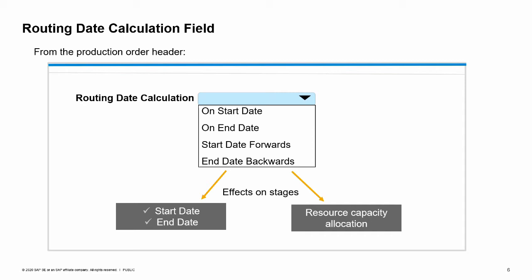Depending on the routing date calculation value, it may also affect the start date and due date in the header. Date scheduling is also relevant for item components because their row start date impacts the MRP. OC Woodtrend manages resource capacity to make sure a given resource is available during production and to plan production ahead. There are four methods of routing date calculation: on start date, on end date, start date forwards, and end date backwards. Let us examine them in the next slide.